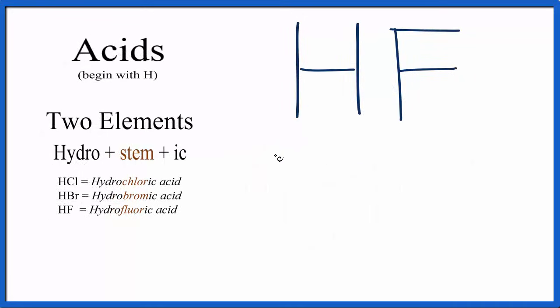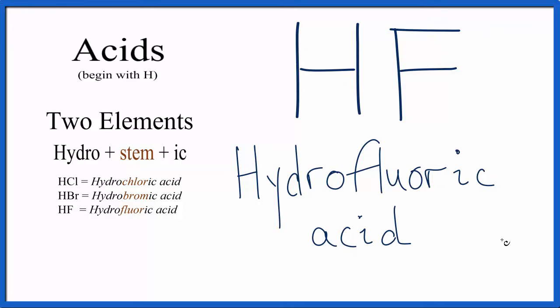For HF, we have two elements again, so we write hydro. Then for F, we go to the periodic table, we look it up, fluorine. We remove the INE, and then we add IC to the stem there. Add the word acid, and we're done. Hydrofluoric acid is the name for HF.